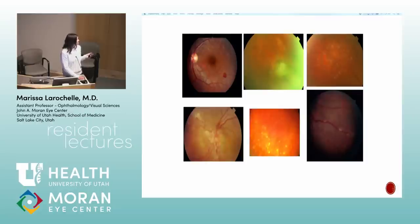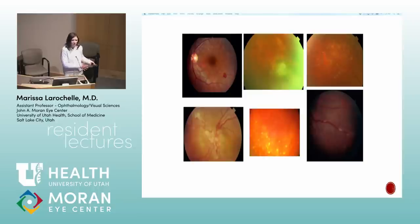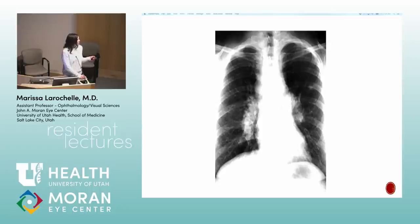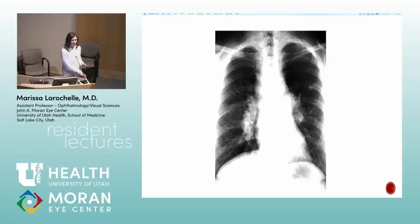Sarcoid can cause hemorrhages and macroaneurysms. Intermediate uveitis with unusual posterior changes, ruled-out infection, and some blood but no ARN-type retinal whitening can end up being sarcoid. Hilar lymphadenopathy can be evanescent and come and go, so you may not catch it on every chest X-ray. With high suspicion, get a chest CT.